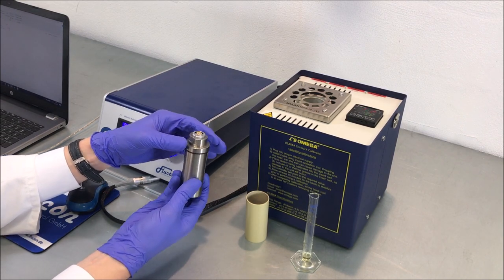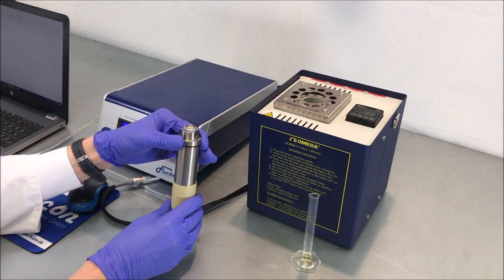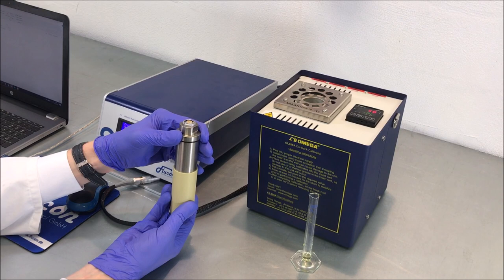Once the cup is screwed on tightly, mount the heat resistant adapter sleeve which adapts to the inner diameter of the thermostat socket.